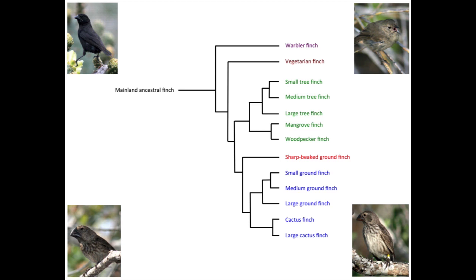The original population of finches probably arrived in the Galapagos Islands about two million years ago, and then competed for the limited resources available on each of the islands, which differ in size, habitat, and ecology. As in any population, there were variations in traits and behaviors within the original bird population, so different types of finches were able to colonize and survive in each habitat.